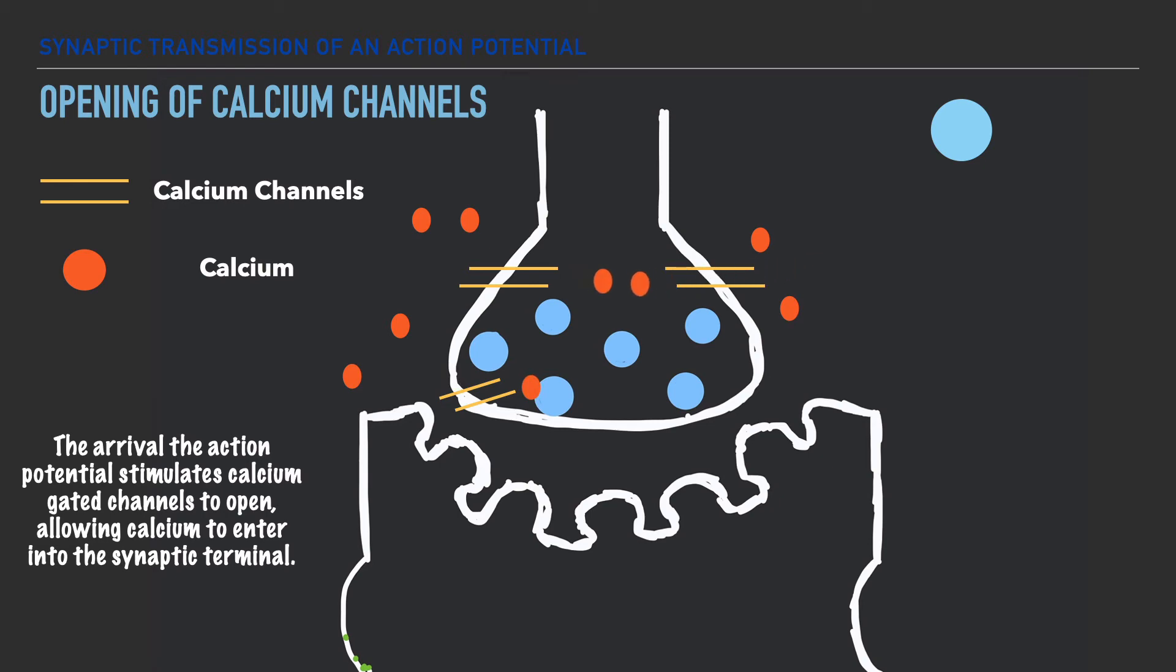The arrival of this action potential also causes the synaptic vesicles within the axon terminal to bind with the end component of the terminal and to then release a specialized neurotransmitter. And after their release,